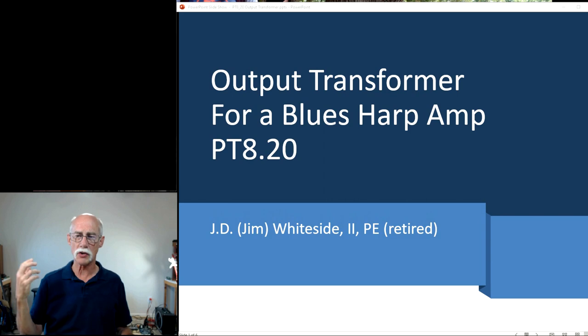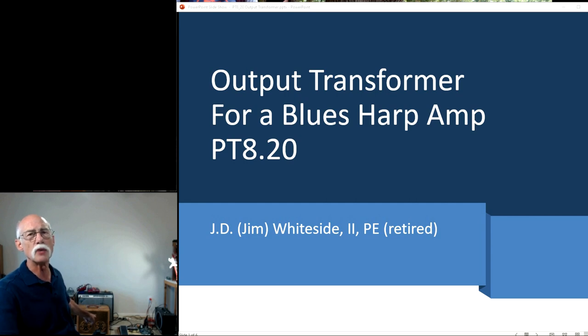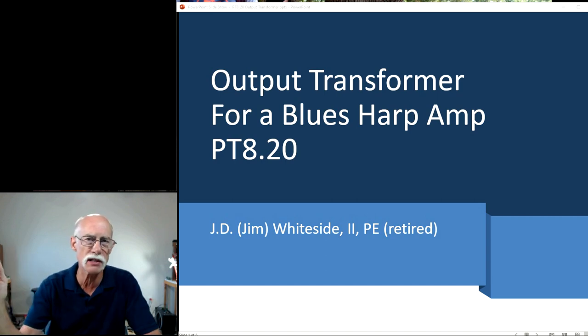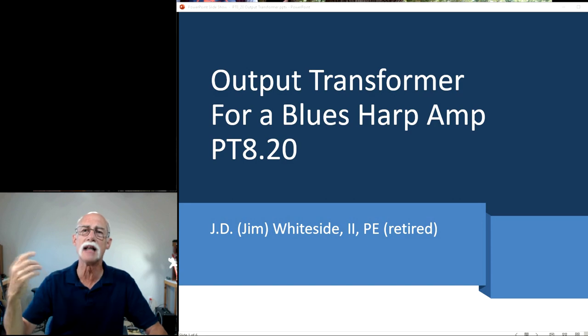The transformers back then for the output transformer is a lot different from what you can currently buy today. So when I built this Premier Twin 8, I originally put in a Hammond 125 SE and it sounded good. I could hear the distortion of the circuit of the 7591 and it sounds great, but I was still missing that boxy bassy sound that those type of amps give. The Premier Twin 8, the Fender Champ, so and so forth. So I did some research.